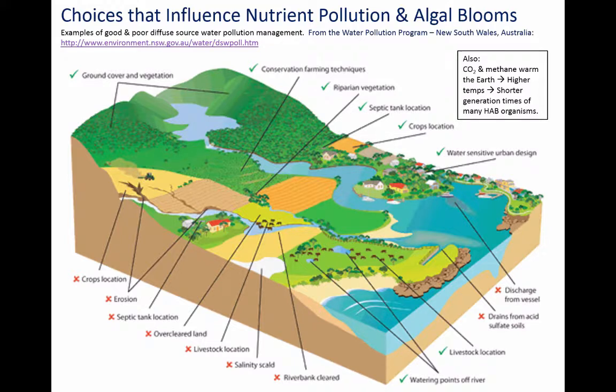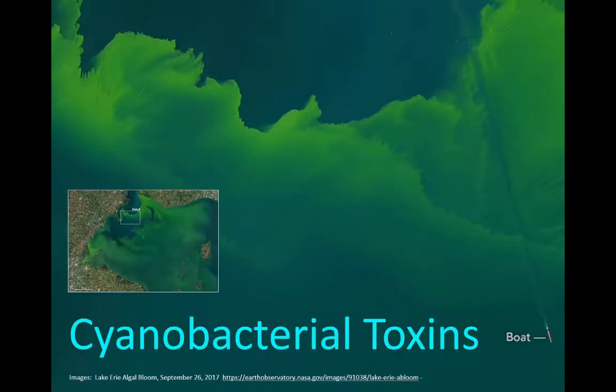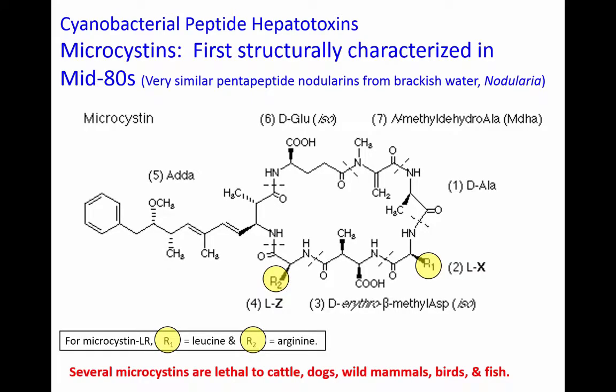Keep in mind that algal blooms result from this kind of mismanagement and are aggravated by climate change. Excess CO2 and methane warm the Earth, and with that warmer temperature come shorter generation times for many harmful algal bloom organisms. Here's a satellite image of Lake Erie — you can see a boat traveling across this algal bloom dominated by Microcystis, which is a major producer of microcystins. Microcystins are toxic to cattle, dogs, wild mammals, birds, and fish. Their structure was first identified in the 1980s, and now many variants have been identified, as well as closely related nodularins produced by Nodularia.